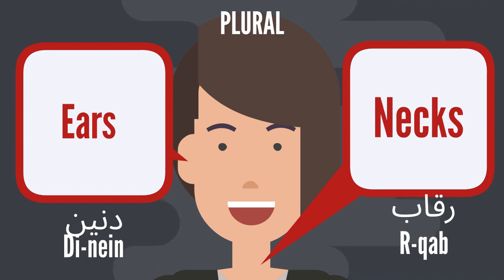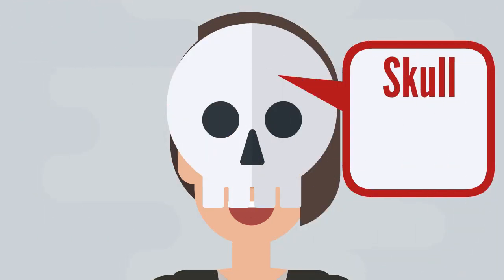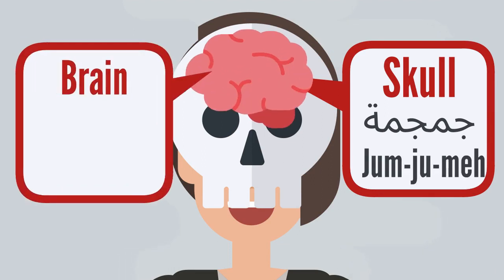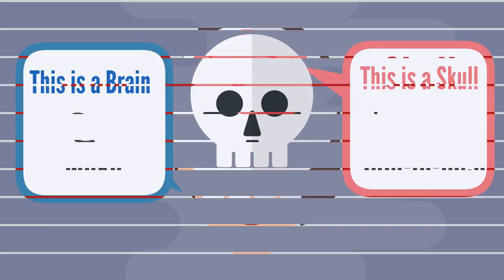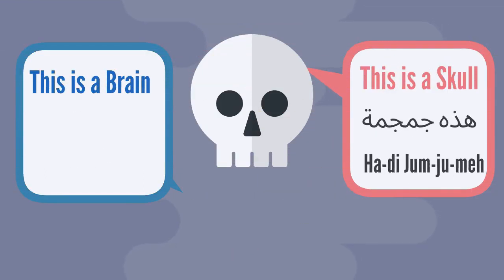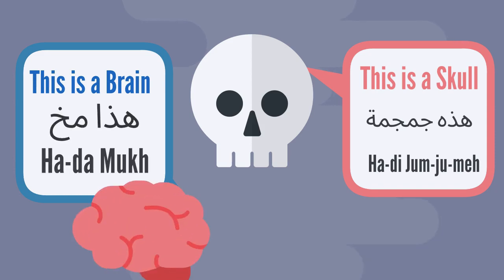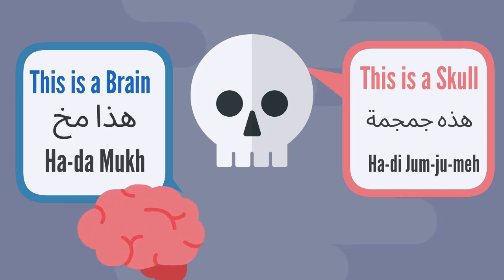Dīnēn is for two ears. Our next term is skull — jumjumē. Brain — mokh. This is a skull — hādī jumjumē. And this is a brain — hādā mokh.